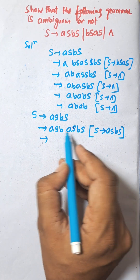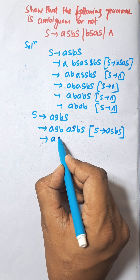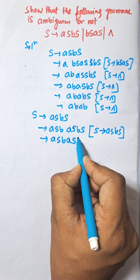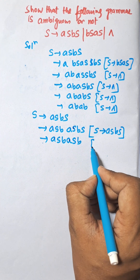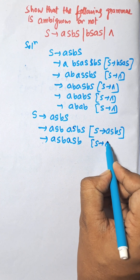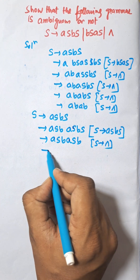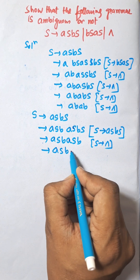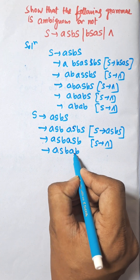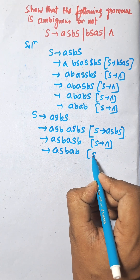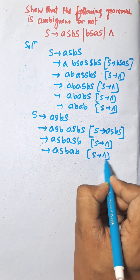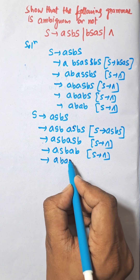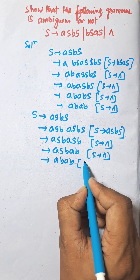S is empty, so aSb → aSb, where S equals empty. Now putting another S as empty: aSb → ab. S is empty, now another empty: that is abab. S is empty.